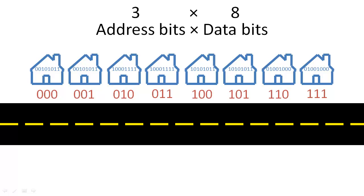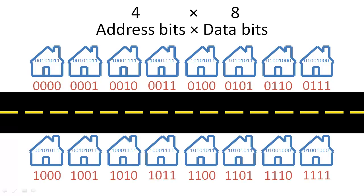If we increase the number of houses, we need to increase the number of addresses, and each additional address bit doubles the number of addresses that we can encode.